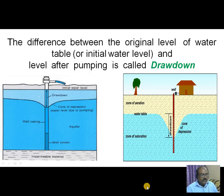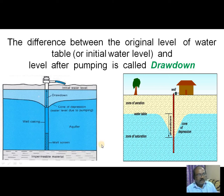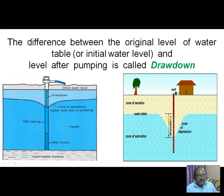The difference between the original level of the water table, or initial water level, and the level after pumping is called drawdown. Drawdown is the difference between the original level and the level after pumping.